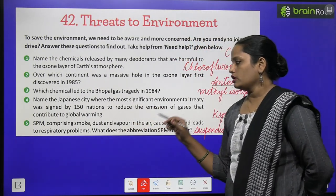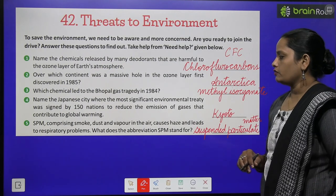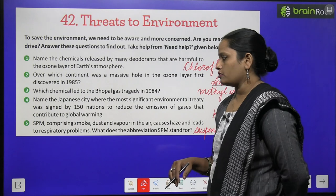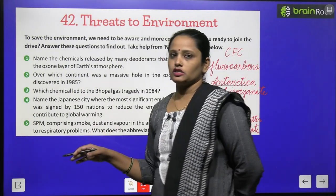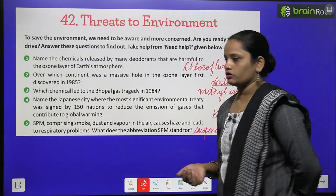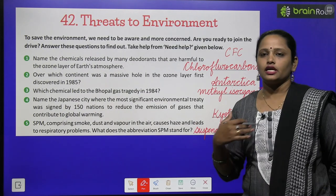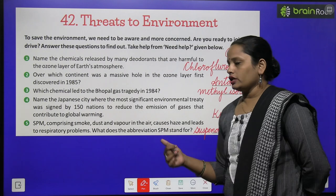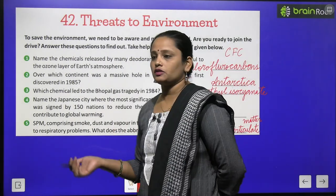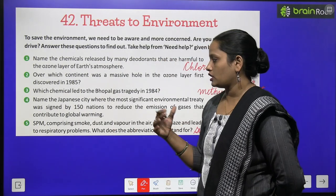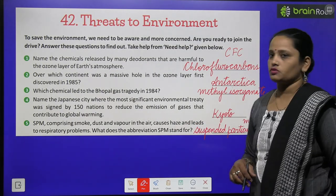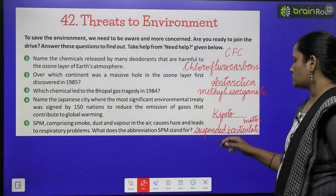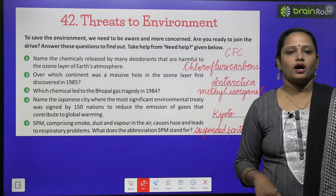SPM, comprising smoke, dust, and vapor in the air, causes haze and leads to respiratory problems. SPM kya hota hai — usmein smoke hota hai, dust hota hai, water vapors hota hai — jo haze dikhaye dega, means dhundla dhundla mausam. Aur iske zariye respiratory problems hoti hain, means saans ki problem ho jati hai. What does the abbreviation SPM stand for? SPM ka full form hai Suspended Particulate Matter.